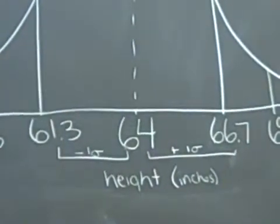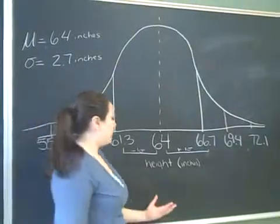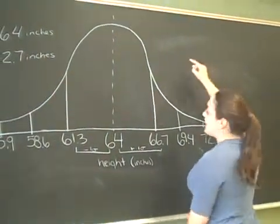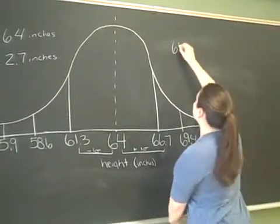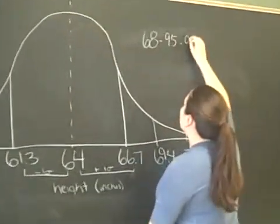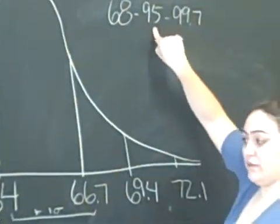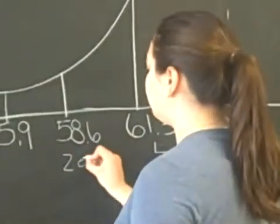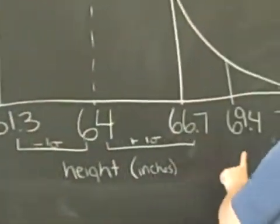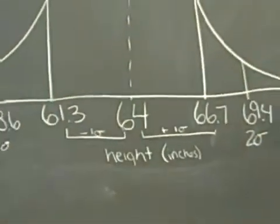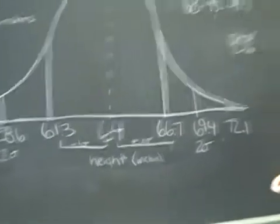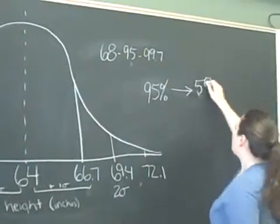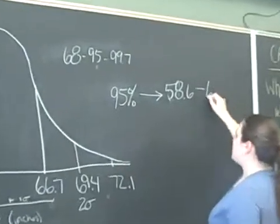If we wanted to know between what two heights 95% of the school falls, we look at the second standard deviations, because the rule is 68-95-99.7, so the second number corresponds with the second standard deviation. Here's 1, and here's 2 — the second standard deviation on each side. So 95% of the girls at our school are between 58.6 inches and 69.4 inches.